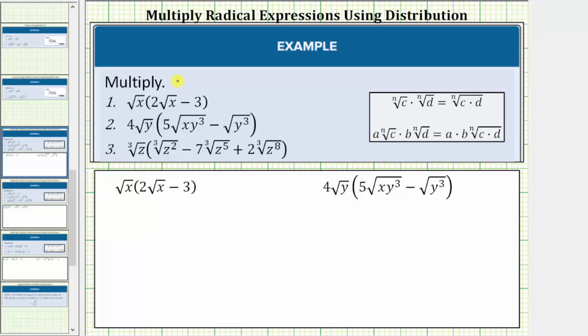We were asked to multiply the given radical expressions. Notice in each product we have a single radical expression times a sum or difference of terms, which means to determine the product, we will need to distribute.